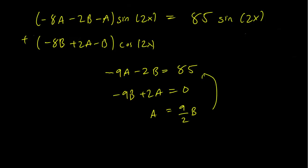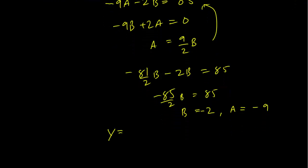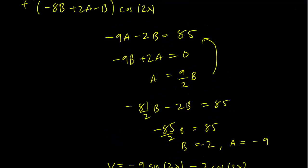Plugging that in the first equation, we get that minus 81 over 2 B minus 2B is equal to 85, or minus 85 over 2 B is equal to 85. This means that B is going to be equal to minus 2, and A is going to be equal to minus 9. And thus, our guess works. And we have our solution of y equals minus 9 sine 2x minus 2 cosine 2x as a particular solution.